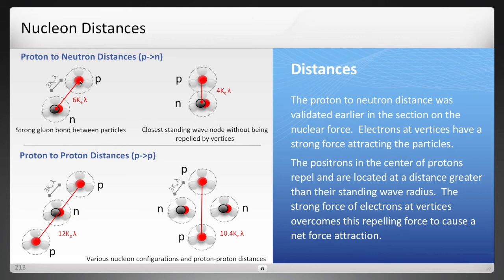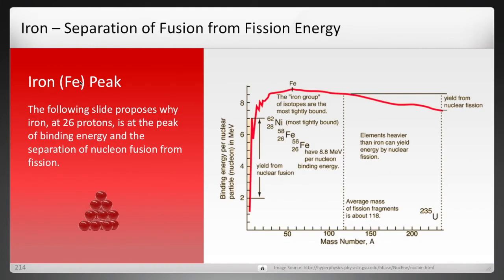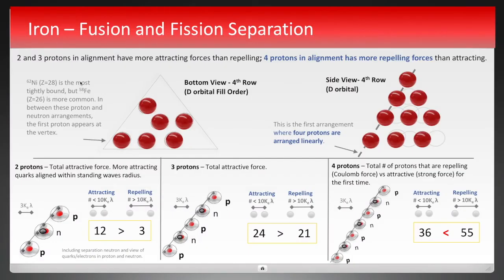Now, why was this done? One of the reasons is to understand the difference between fusion and fission. Iron is the peak that separates fusion from fission. In this red slide, so I won't go through the details, but it's important to recognize that iron would be the first time that in a fourth row the vertice proton is placed. And when you align all of the protons, you can see here in the bottom right that there are more propelling forces now than attracting. So a possible explanation as to why iron is that separation point.